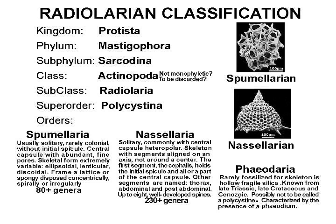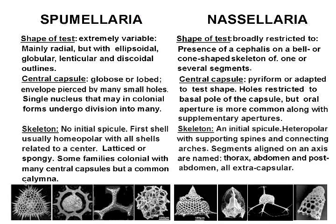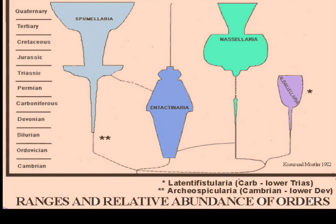This broad-brush summary sketched an established tripartite classification of radiolarians, citing two orders — Spumellaria and Nassellaria — that have been and are widely used in biostratigraphy. But current classifications of fossil radiolarians are more discriminatory and are under constant critical review.